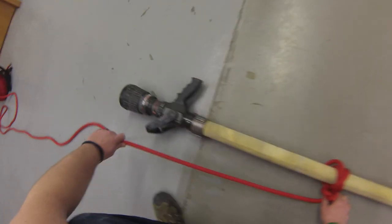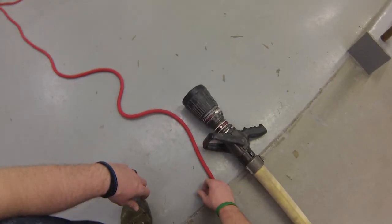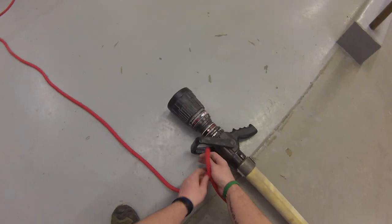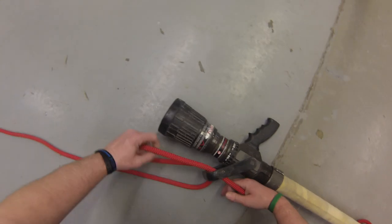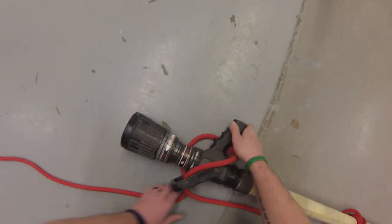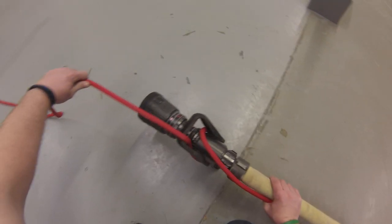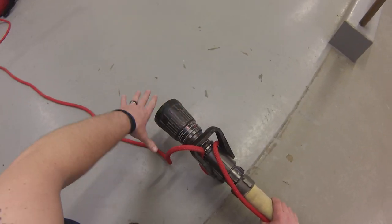Now what I need to do next is in this standing part make a bite so that I can keep the bail locked closed. So if I make my bite, I'm going around the tip of the nozzle, back around the pistol grip. So what that does is when we hoist with this rope, it keeps the bail closed so we don't have a discharge of the hose line.